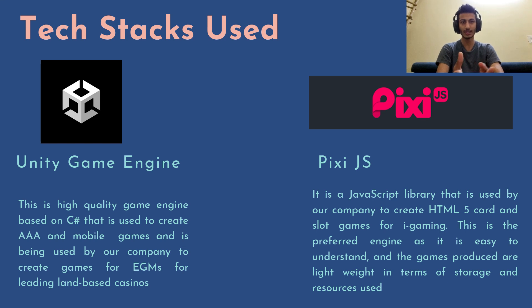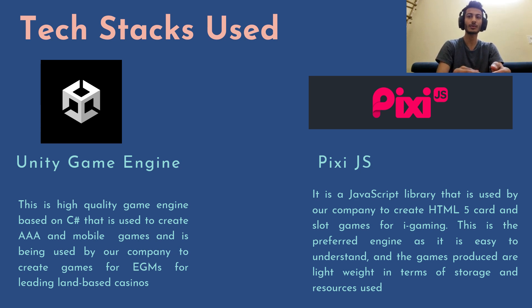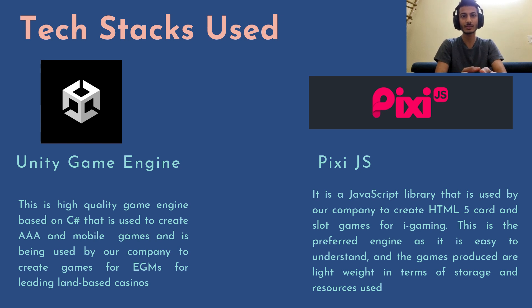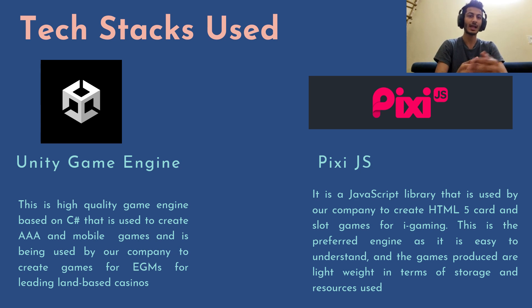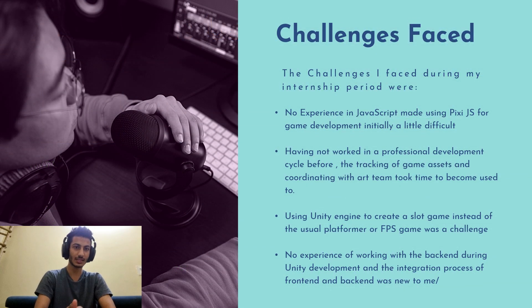The main two tech stacks I used during development were Unity game engine and Pixie.js. The Unity game engine is a high-quality game engine based on C#, generally used to create AAA games, mobile games, and augmented reality games, and was used by the company to create EGMs for leading land-based casinos. Pixie.js is a JavaScript library used by the company to create HTML5 card and slot games for iGaming. It is the preferred engine as it is more optimized and lightweight, well-suited for internet games that load the whole game over the internet.